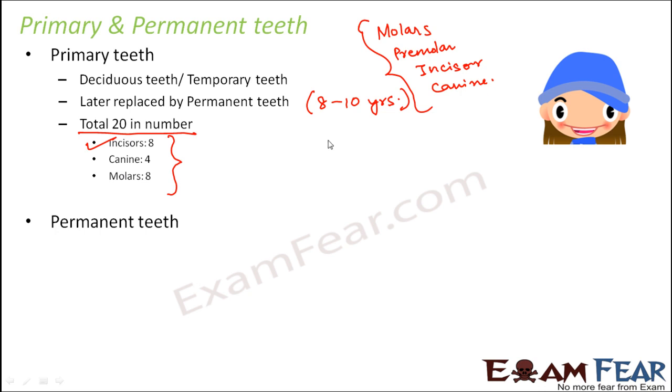These incisors are present in front of the mouth. Whenever you smile, the teeth which are visible in the front, they are the incisors. Whereas molars and premolars are present at the corners and are specifically used for biting purpose.